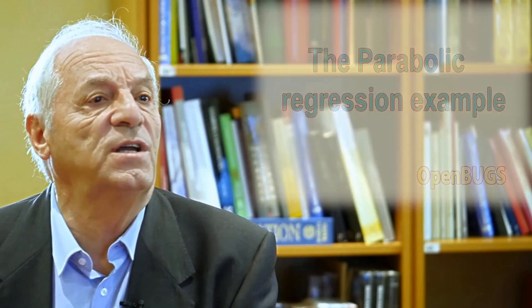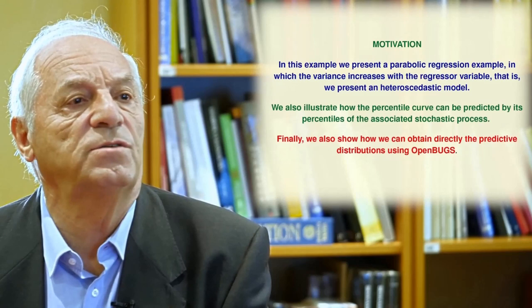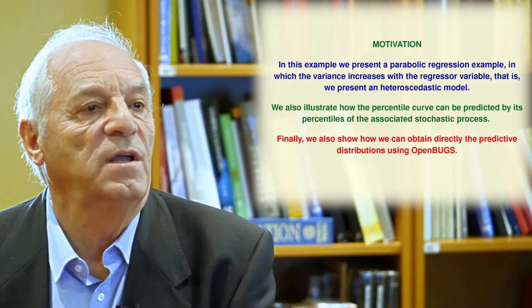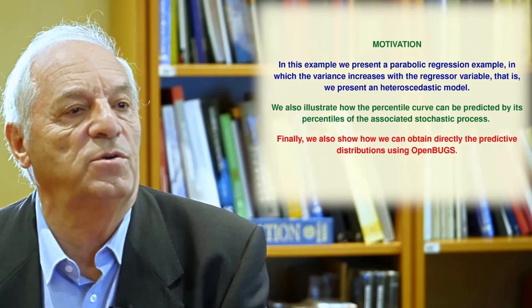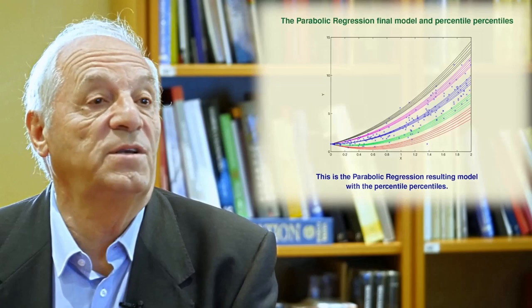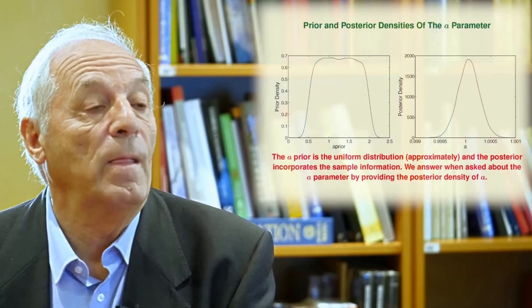The next lesson is dedicated to the parabolic regression example — a very interesting example in which the variance increases with the regression variable, that is, it is a heteroscedastic model. We will also explain how to obtain percentiles of the percentile curves, and finally we show how to obtain directly the predictive distribution using OpenBUGS. The fit is very good to the data, and you also get percentiles for the percentile curves, which is a very nice result. Density estimates of the parameters are given instead of classical point estimates.